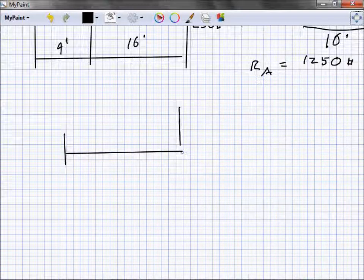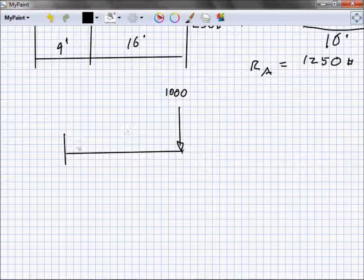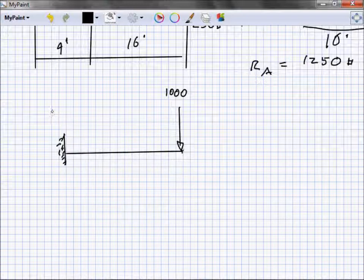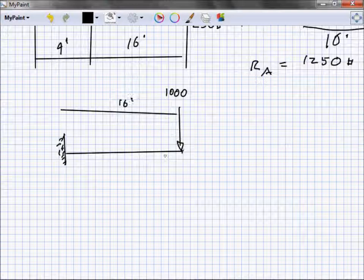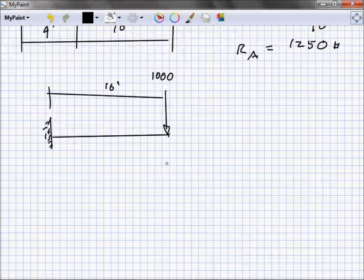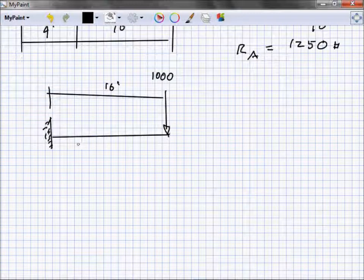The last little simple beam example we're going to do is a cantilever. We've got our 1,000 pounds coming down here, and this is a fixed connection, fixed right into the wall. Let's call this 16 feet. So what's the first thing that we're going to do? Get rid of that nasty thing.